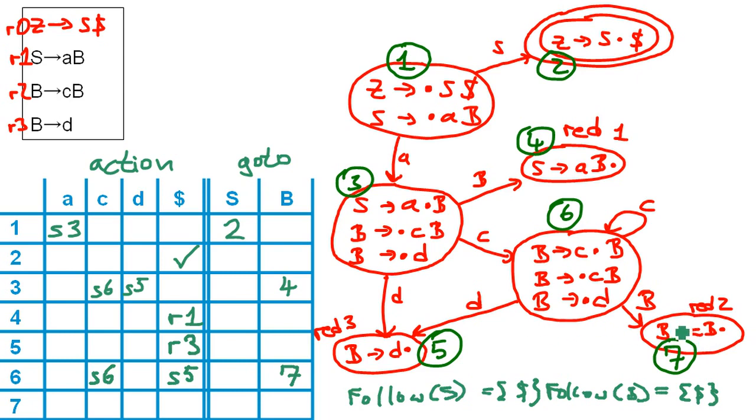Being in state number seven, let's look at state number seven. We have a reduction again. Again, because this is a B here in this place, we only write the reduction in the follow of B. This is supposed to be a B. Again, only the dollar sign and we have a reduction by rule number two. And that's it. We made the parsing table for our state machine.